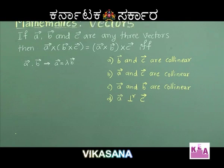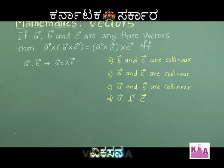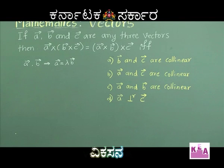The options are: option A — vector B and vector C are collinear; option B — vector A and vector C are collinear; option C — vector A and vector B are collinear; option D — vector A is perpendicular to vector C.